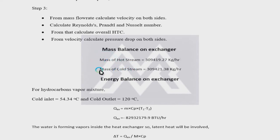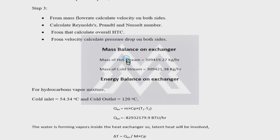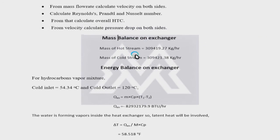There are two types of flow arrangements. It can be counter-current or co-current, in which the two streams — hot stream and cold stream — flow opposite to each other; that is counter flow. In co-current, the hot stream and cold stream flow parallel to each other in the same direction.